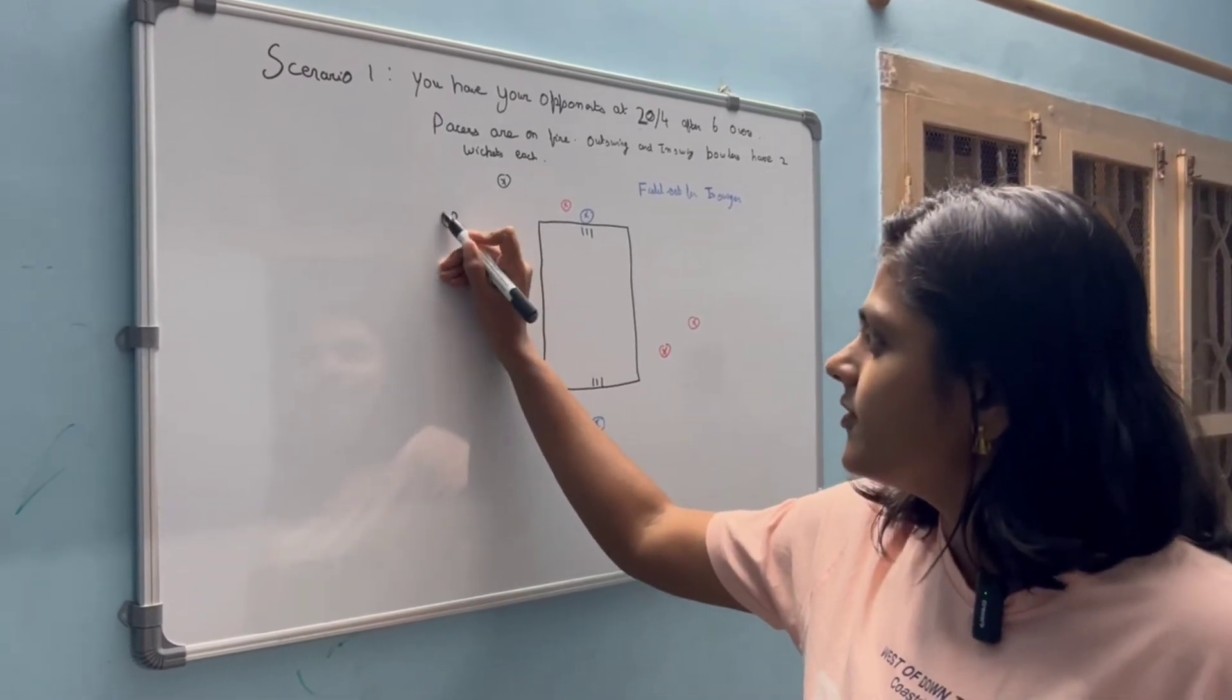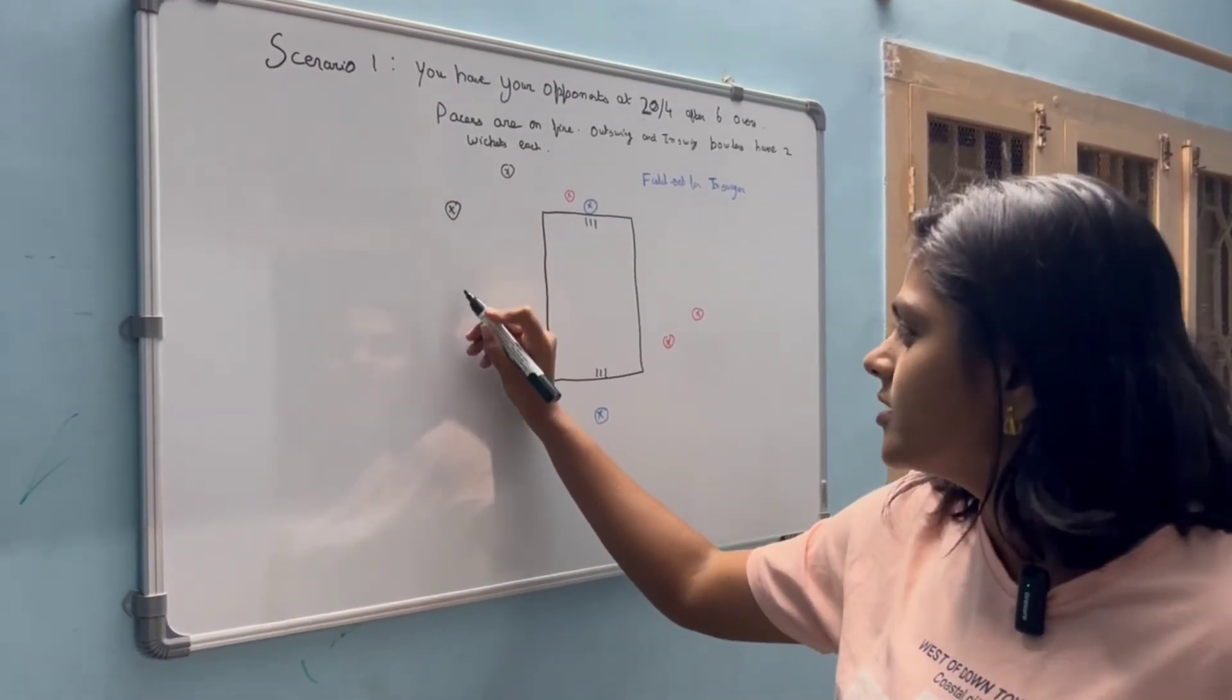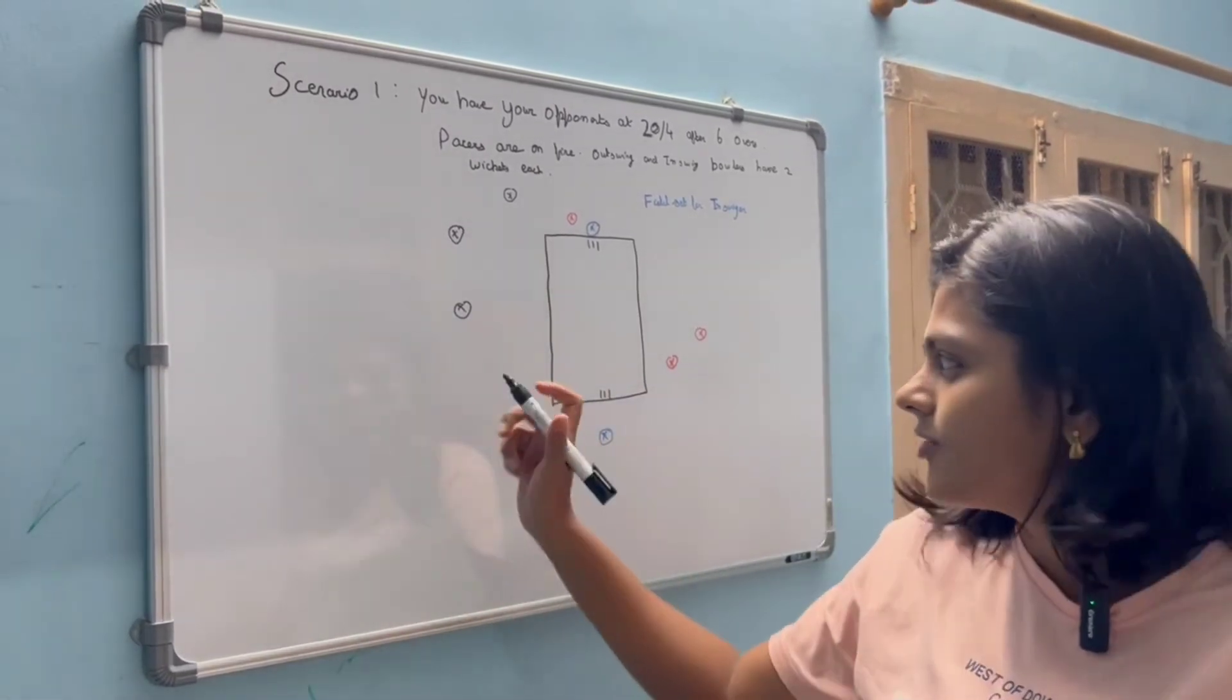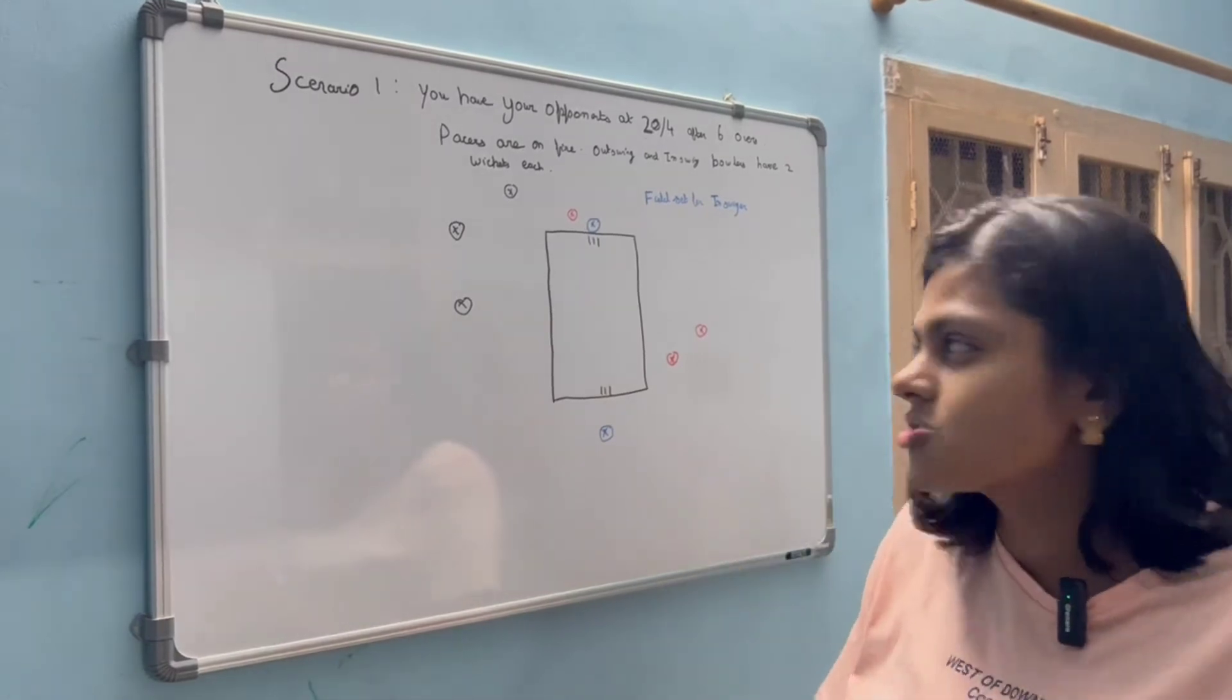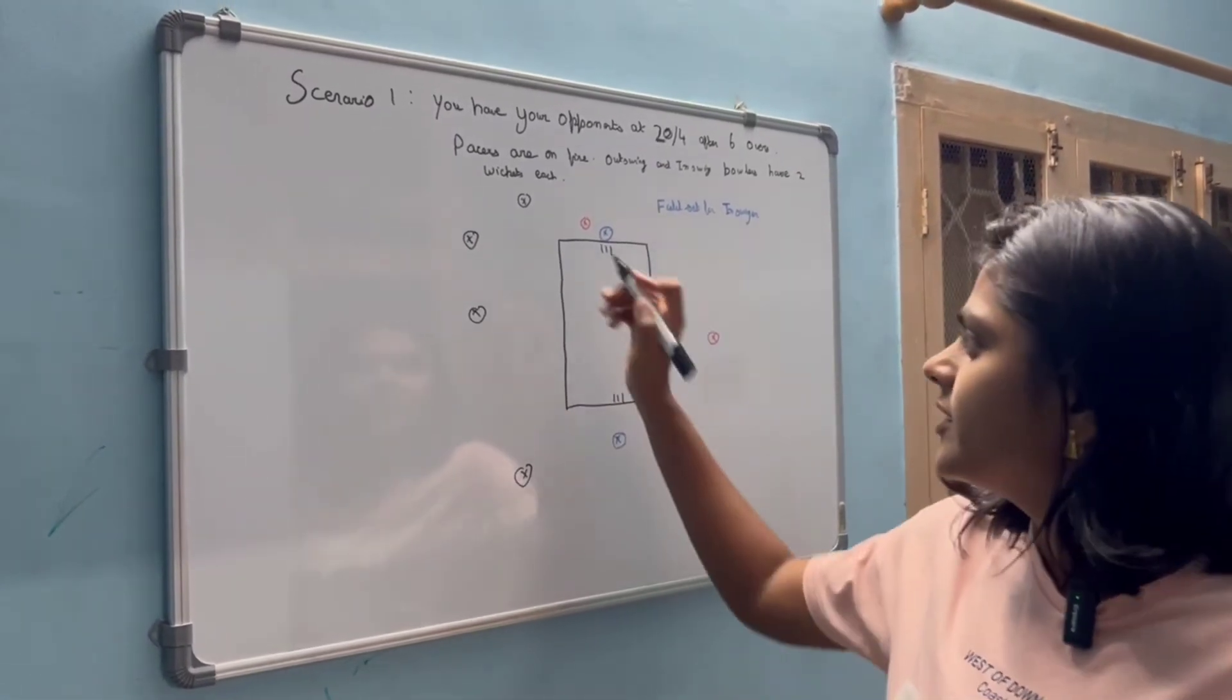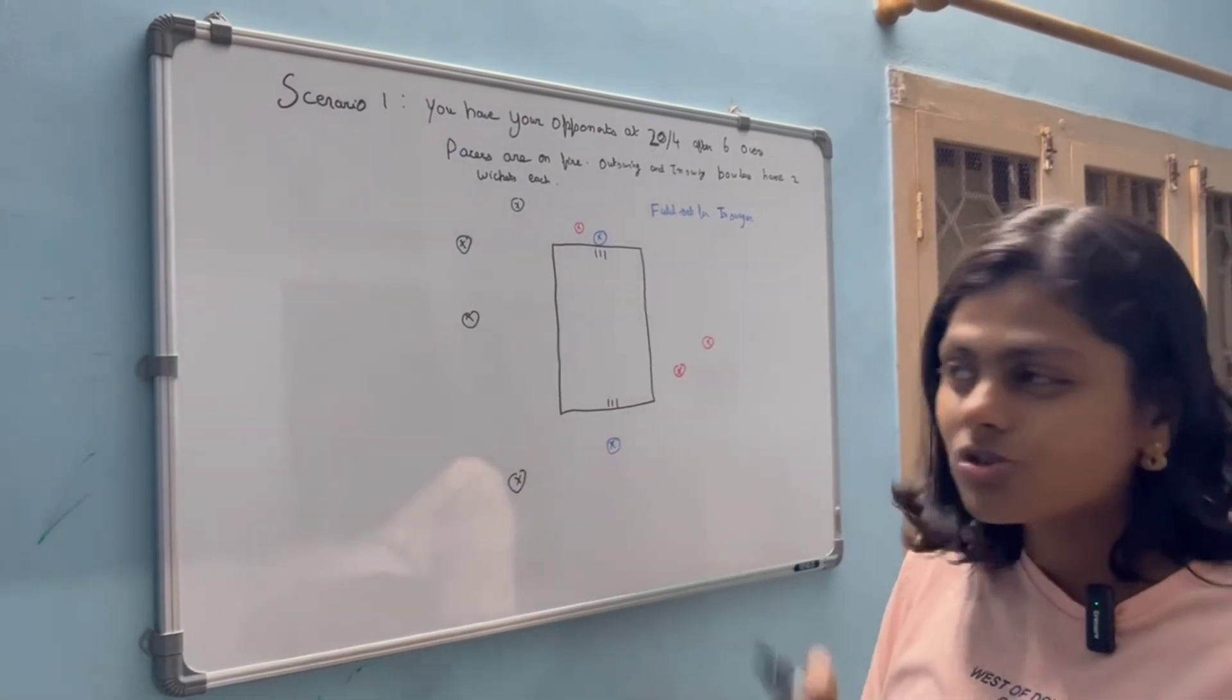I will definitely have a point fielder slightly in front of square, a person in the cover region probably able to cover both angles at cover point and extra cover as much as possible. I will definitely have a mid-off fielder.